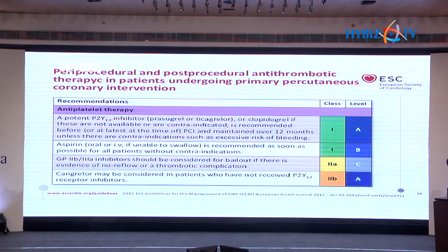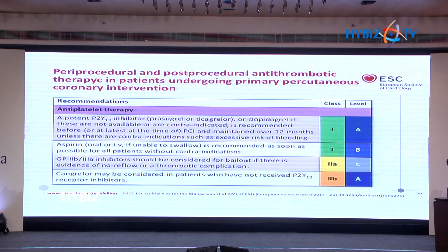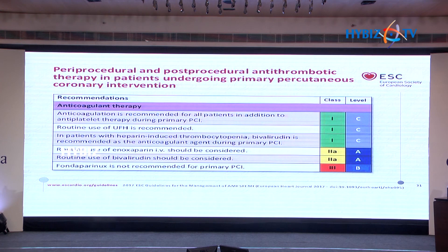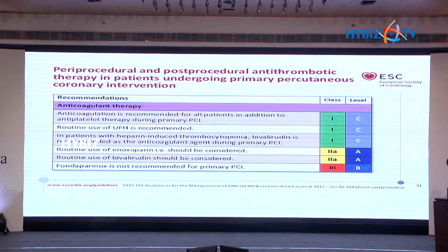Aspirin, oral or IV, is recommended as soon as possible for all patients without contraindications — Class I, Level of Evidence B. GP IIb/IIIa inhibitors may be considered as a bailout procedure — Class IIA, Level of Evidence C. Cangrelor may be considered in patients who have not received a P2Y12 receptor inhibitor — Class IIB indication.